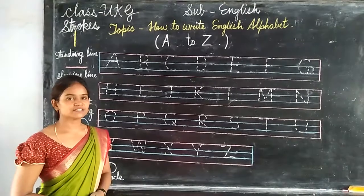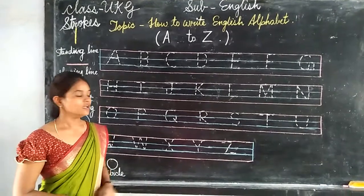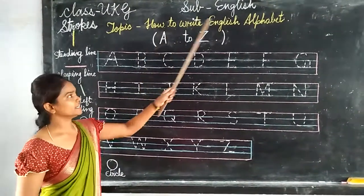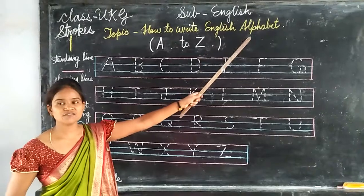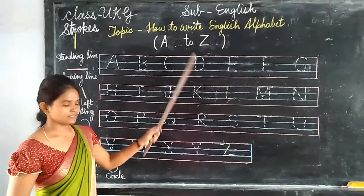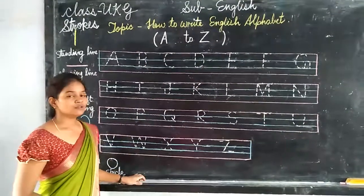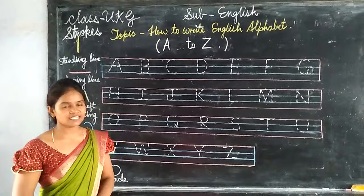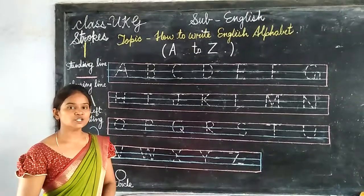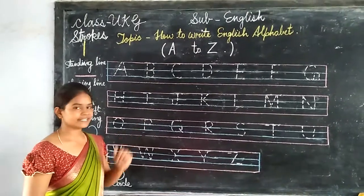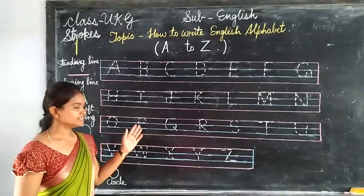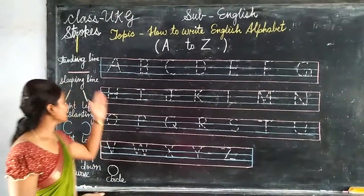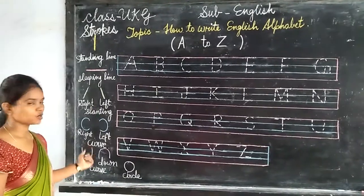Good morning students. Today I am going to teach you how to write the English alphabet A to Z. Before learning to read and write any language, we must know letters. And to write these letters, we will learn some kinds of strokes.